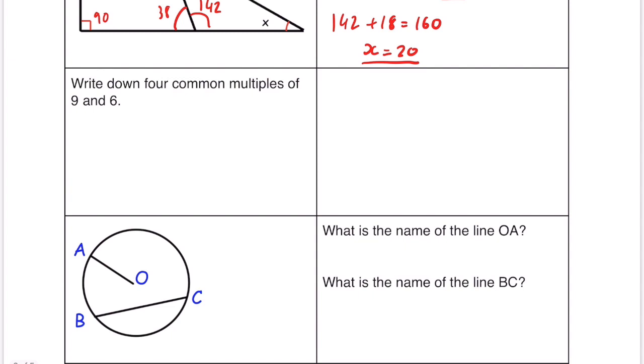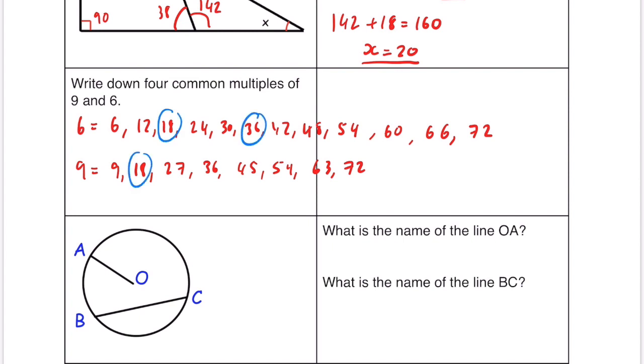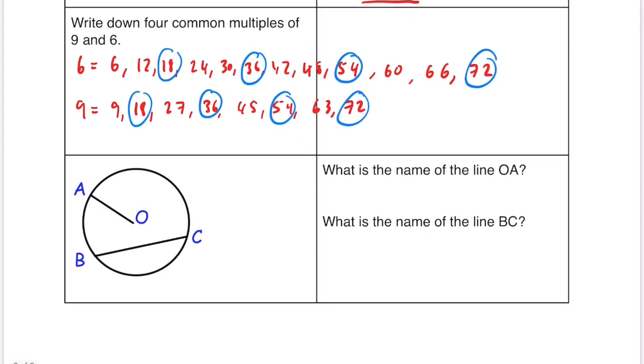Write down four common multiples of 9 and 6. So if we just write out the 6 times table and then we write out the 9 times table from here we just need to find the ones that are in both. So 18, 36, 54 and 72. That's going to be our 4. What is the name of the line OA? That looks like the radius because O is the center. And BC is a chord.